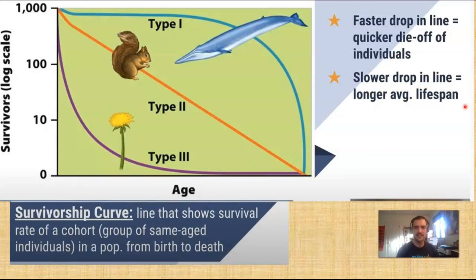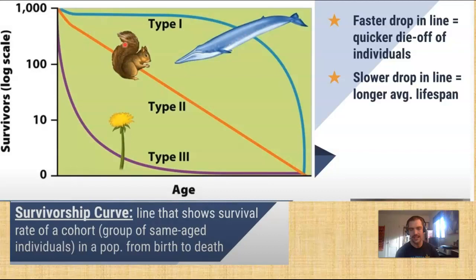You can see that a whale lives really long and gradually they start to die of old age. Chipmunks die kind of periodically throughout, whether they're babies or older. And then just like the tree, these dandelions — a lot of them die when they're really young, and then their survival tapers out as they get to a certain age, and that's as old as they get. These are all relative to the age of the animal. Squirrels don't live very long, but this is relative to how long they live and at what ages they die. Same with the whale — they live for a really long time, but this is showing relative to their long lifespan when they survive.